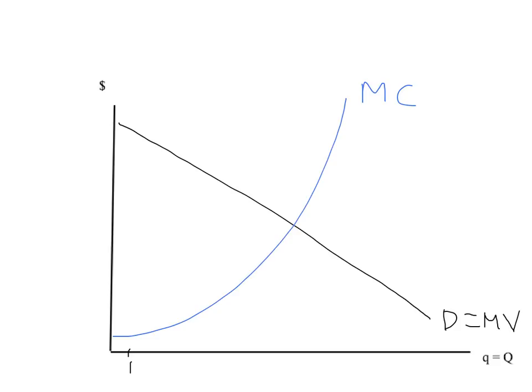So the monopolist is able to set a price right up here for that first unit.